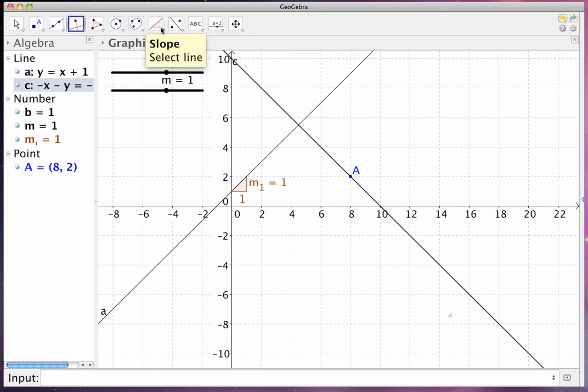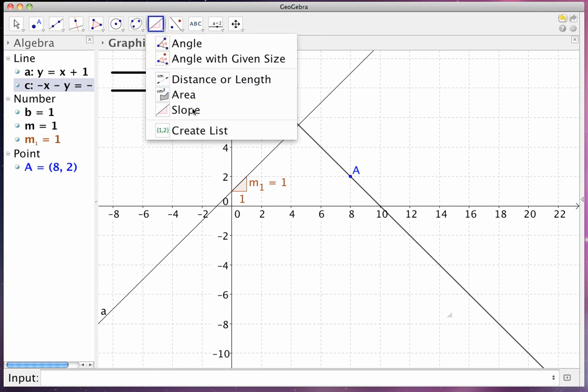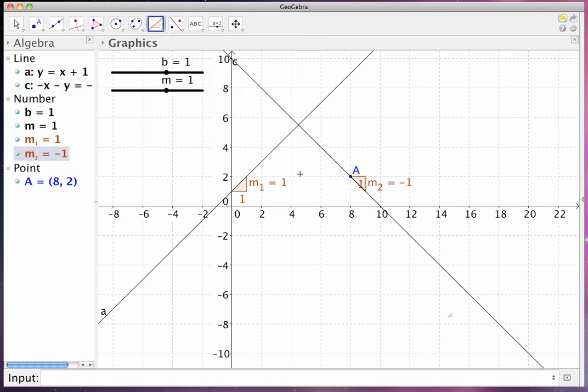And then I will go to my slope measuring device, make it into a slope measuring device. And look at that. The slope of this line is negative 1. Voila. Voila, by the way, is English for voila. That's my little joke that I tell my students.